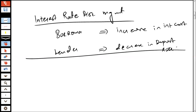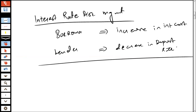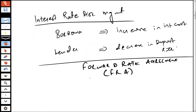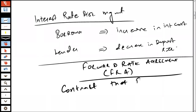The first technique I'm going to start off is called the Forward Rate Agreement, also commonly known as FRA. Now let's talk about the concept of this forward rate agreement — what exactly it is. A forward rate agreement is a contract that fixes your interest rate, whether you are a borrower or whether you are a lender.